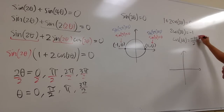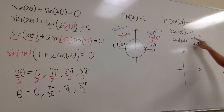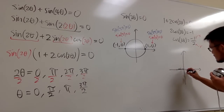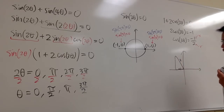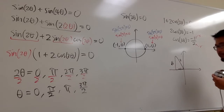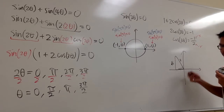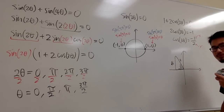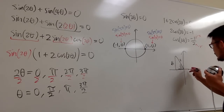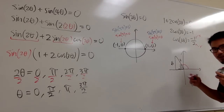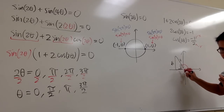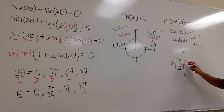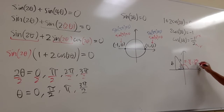Cosine is x over r, so x is negative 1 and r is 2. We draw a right triangle in the second quadrant with hypotenuse 2 and horizontal leg of length 1, and the vertical leg is the square root of 3. This is a 30-60-90 triangle, so the reference angle is 60 degrees, or pi over 3. The actual angle is pi minus pi over 3, which equals 2 pi over 3. So 2 theta equals 2 pi over 3, and dividing by 2 gives theta equals pi over 3.